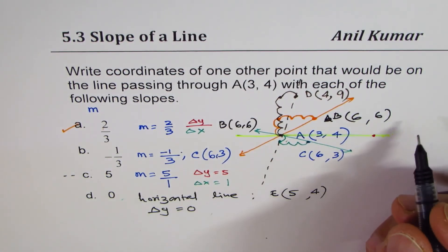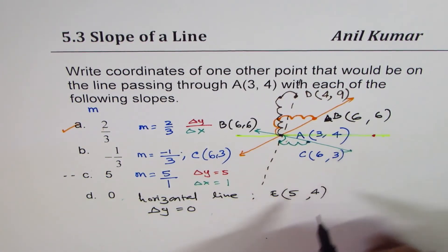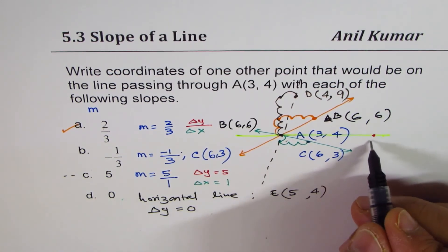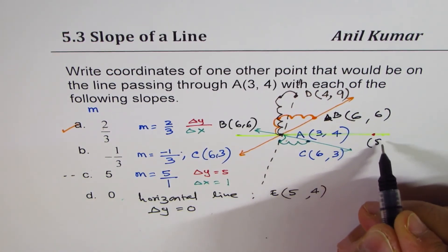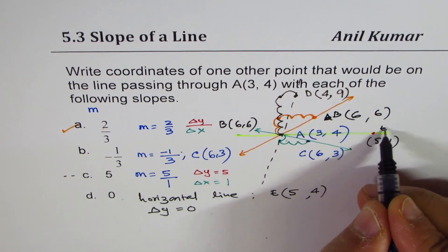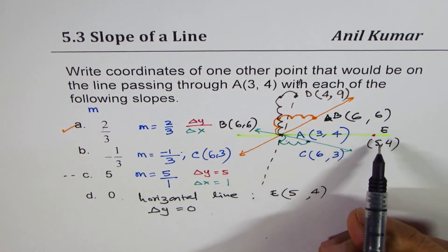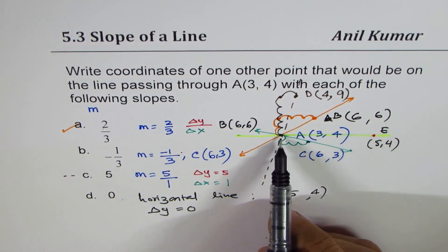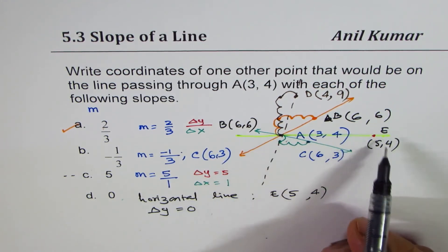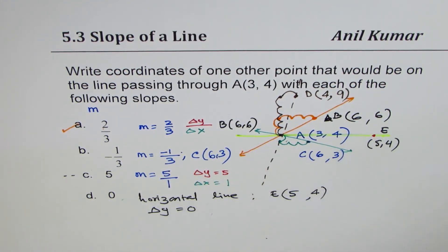We could call this point E, where y remains the same — y stays 4 — but x can be any value, for example 5. So we get point E as (5, 4), which is horizontally placed with point A, and the slope of line AE is 0.